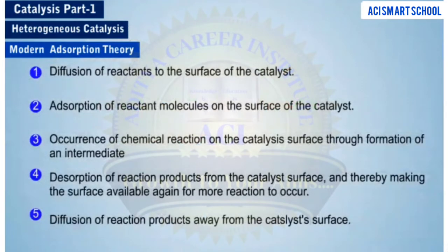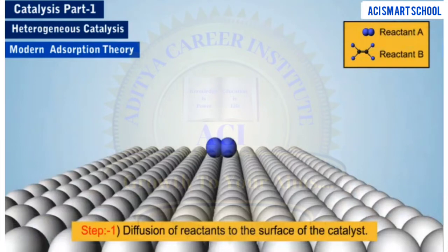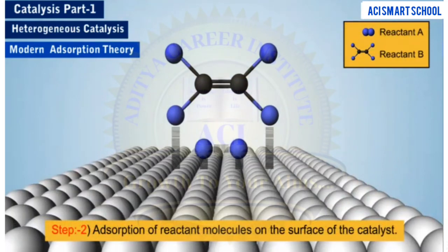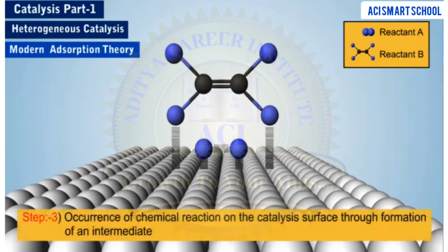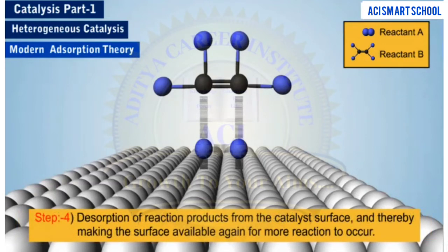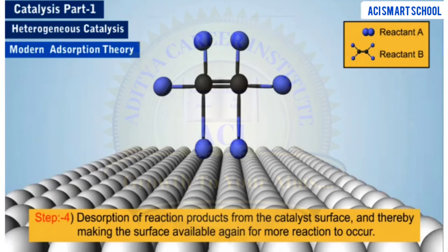The catalysis process involves five steps. The first step involves diffusion of the reactant molecules towards the surface of the catalyst. The second step involves adsorption of the reactant molecules on the surface of the catalyst, followed by the formation of weak bonds with the catalyst due to the presence of free valences. The third step involves a chemical reaction between the reactants and the catalyst, forming a complex that is essentially the product attached to the catalyst. The fourth step involves desorption of the product molecules from the surface of the catalyst, as it lacks affinity for the catalyst surface, making the surface free and ready to interact with another reactant molecule.